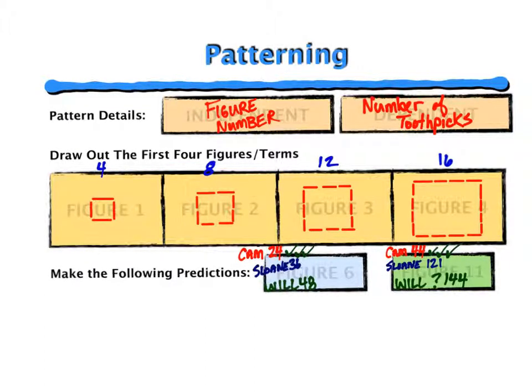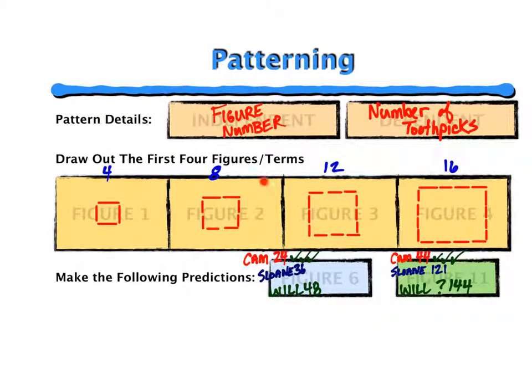Today we looked at patterning. To introduce the topic, we looked at a video of toothpicks forming patterns. Figure 1 was 4 toothpicks, figure 2 was larger and gave us 8 toothpicks, figure 3 larger still, a 3x3 which gave us 12 total toothpicks, and then we were required to show what we thought figure 4 would look like.